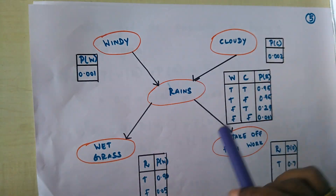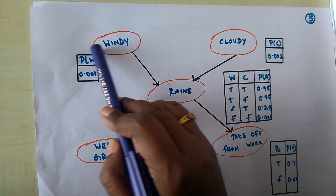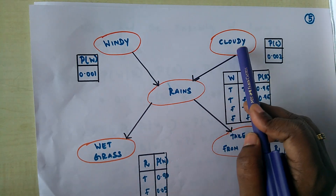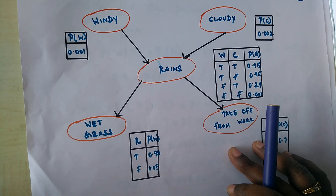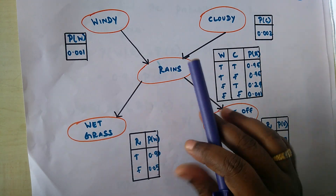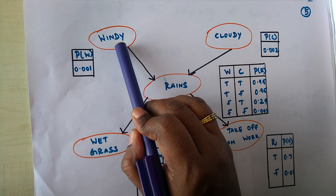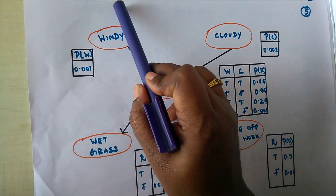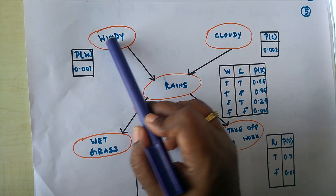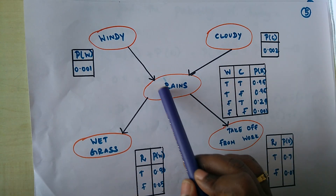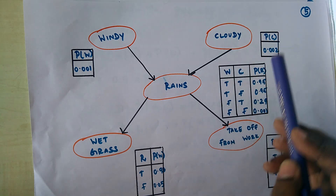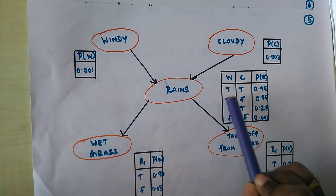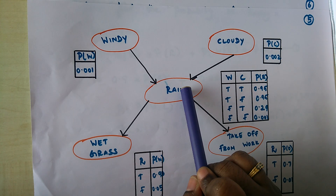Here is an example. The probability of the weather being windy is 0.001, and the probability of being cloudy is 0.002. We have another variable called raining, which is dependent on two parents: windy and cloudy. Windy and cloudy have single probability values because they are not dependent on any other random variable. Since rain is dependent on two random variables, we have four combinations of conditional probabilities in its conditional probability table.